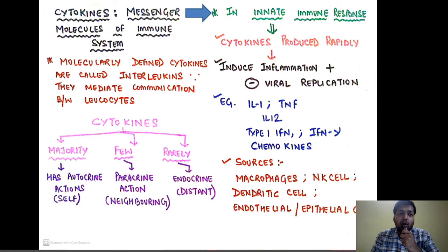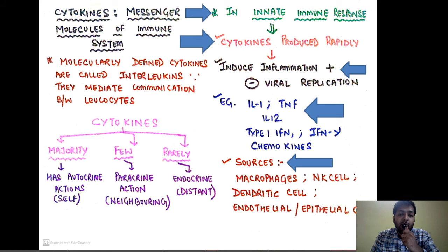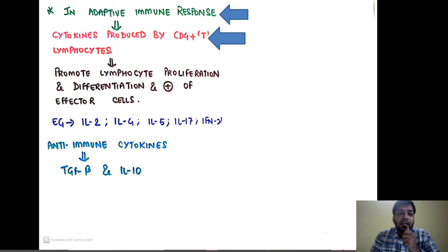In the innate immune response, cytokines are produced rapidly and induce inflammation and inhibit viral replication. The important cytokines are interleukin-1 and TNF, interleukin-12, type 1 interferon, interferon gamma, and chemokines — sourced mainly from macrophages, dendritic cells, natural killer cells, and endothelial and epithelial cells. In the adaptive immune response, cytokines are produced by CD4-positive T lymphocytes and promote lymphocyte proliferation and differentiation, stimulating effector cells. Examples include interleukin-2, 4, 5, interleukin-17, and interferon gamma. Anti-immune cytokines are TGF-beta and interleukin-10.